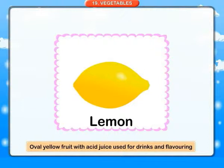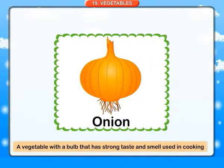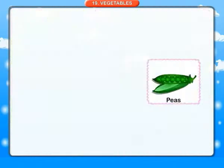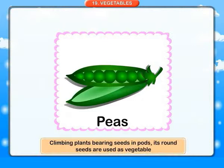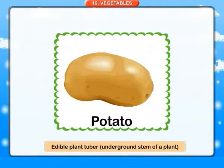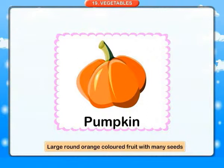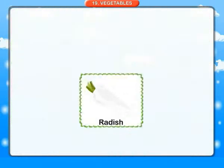Lemon: an oval yellow fruit with acid juice, used for drinks and flavoring. Onion: a vegetable with a bulb that has a strong taste and smell, used in cooking. Peas: climbing plants bearing seeds in pods; its round seeds are used as a vegetable. Potato: an edible plant tuber, underground stem of a plant. Pumpkin: a large round orange-colored fruit with many seeds. Radish: a plant with a crisp root that is eaten raw.